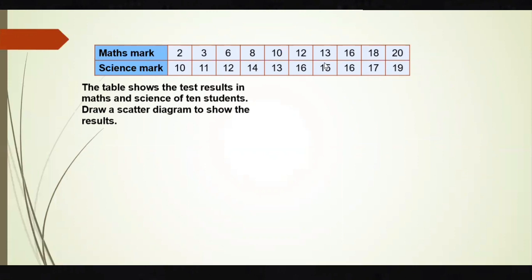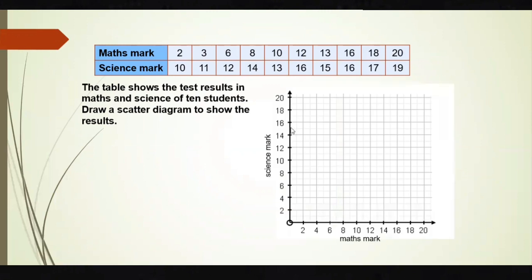Now let's look at a question. The table shows test results in maths and science for 10 students. Draw a scatter diagram to show the results. We draw the x-axis and y-axis, with maths marks on the x-axis and science marks on the y-axis. We plot the points: (2,10), (3,11), (6,12), (8,14), (10,13), (12,16), (13,15), (16,16), (16,16), (18,17), and (20,19).